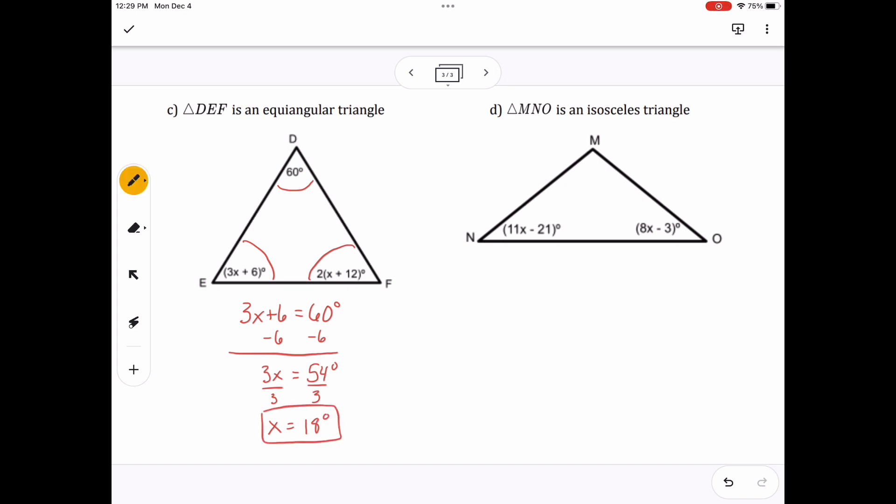And then the last one, we have an isosceles triangle where the base angles are equal to each other because the opposite sides are equal. So that means 11x minus 21 is equal to 8x minus 3. So here, I can subtract 8x from both sides. That gives me 3x minus 21 equals negative 3. And then I want to add 21 to both sides. That gives me 3x equals 18. And then from there, dividing by 3 to both sides gives me x equals 6 degrees.